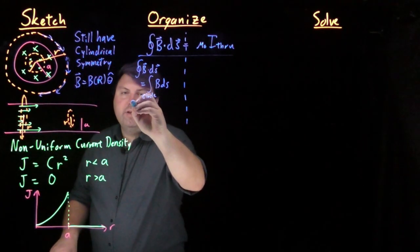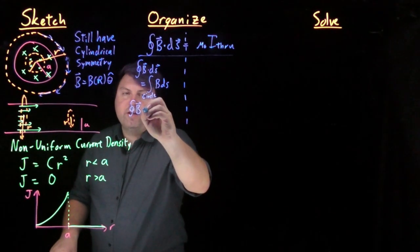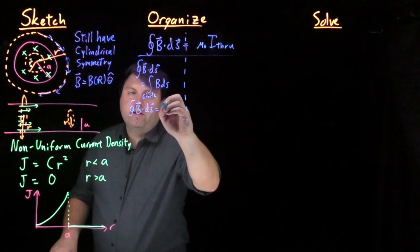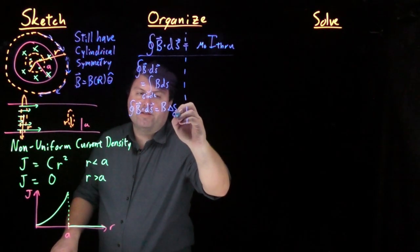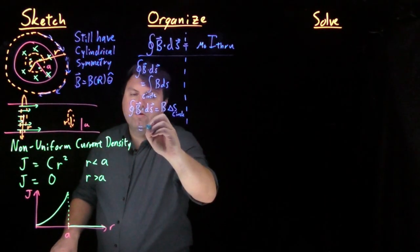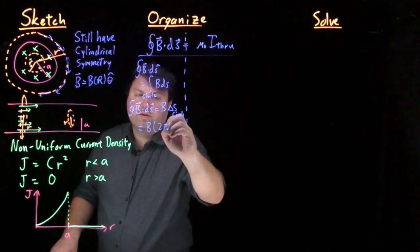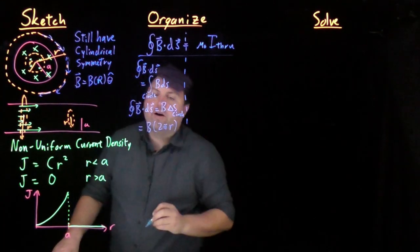So what we get is that our closed integral of b dot ds is equal to b times delta s of our circle, or it's equal to b times 2 pi r.